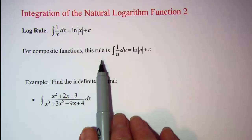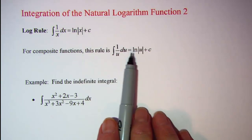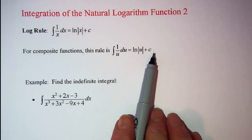For composite functions the rule becomes the integral of 1 over u du equals ln absolute value of u plus a constant.